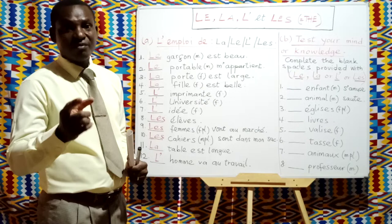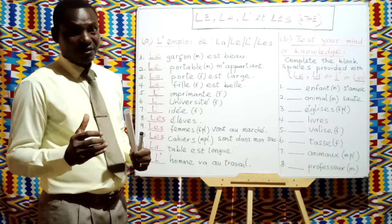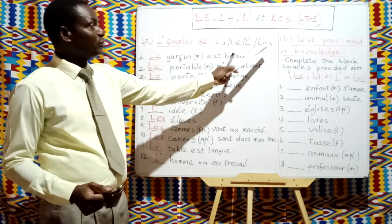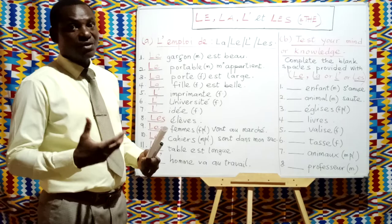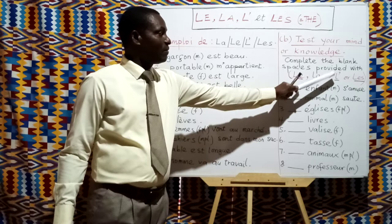Now I think you have the key to use le, la, l'apostrophe, and les properly. Let's go ahead and test your knowledge — fill in the following blank spaces. Complete the blank spaces provided with le, la, l'apostrophe, or les. I'll give you a few seconds for each one.